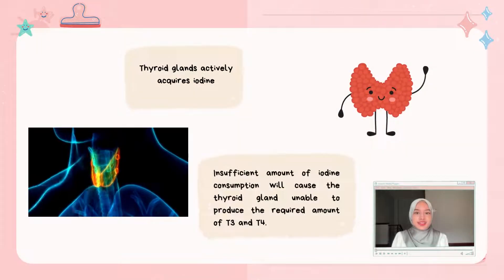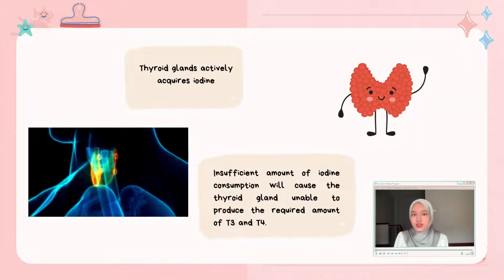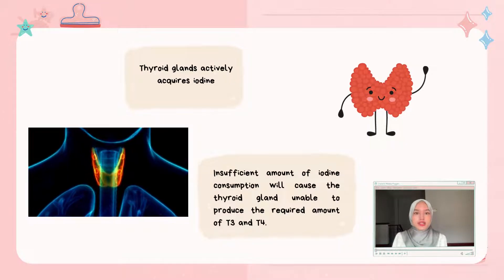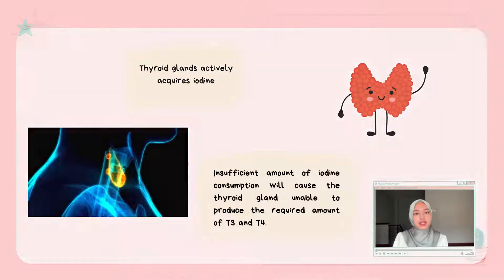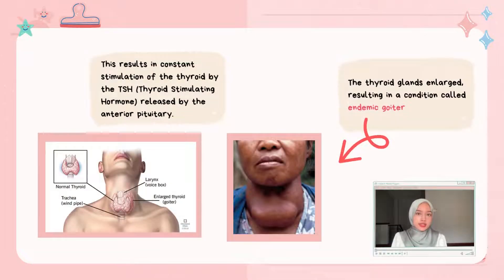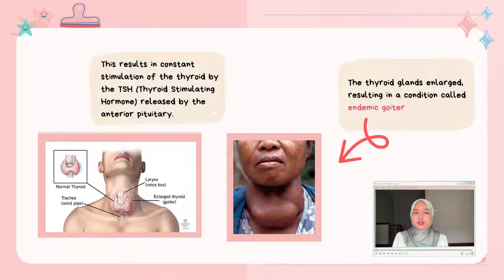The thyroid gland actively acquires iodine, and insufficient iodine consumption will cause the thyroid gland to be unable to produce the required amounts of T3 and T4. This results in constant stimulation of the thyroid by the thyroid stimulating hormone TSH, released by the anterior pituitary, causing the thyroid gland to enlarge — a condition called endemic goiter.